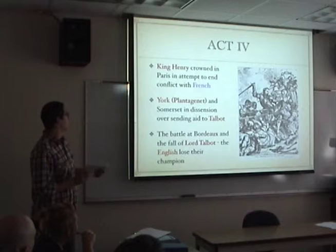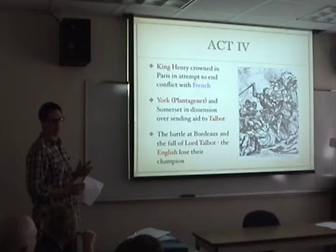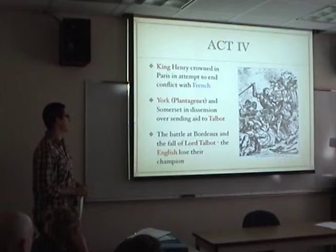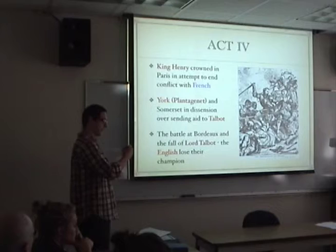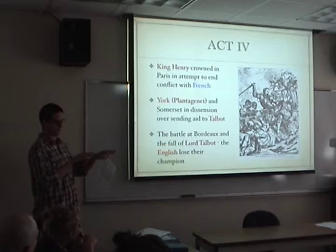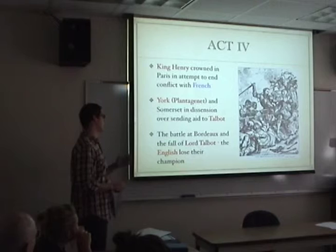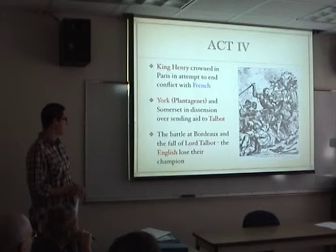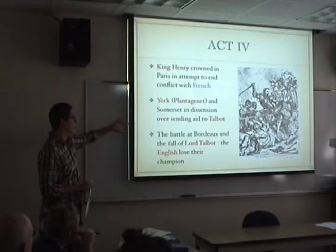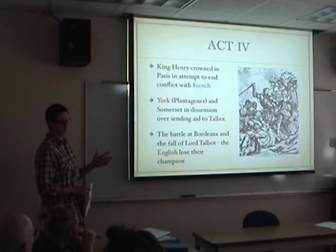In Act 4, King Henry goes to Paris and is crowned there in an attempt to quell the conflict. More conflict ensues between Plantagenet, now Duke of York, and Somerset. To cool the conflict, King Henry VI puts York in charge of infantry and Somerset in charge of cavalry. Lord Talbot then attacks Bordeaux and is trapped — attacked from within the city and from behind. He calls for aid, but due to York and Somerset's contention, aid is not sent, and Lord Talbot falls — a detrimental loss for the English.